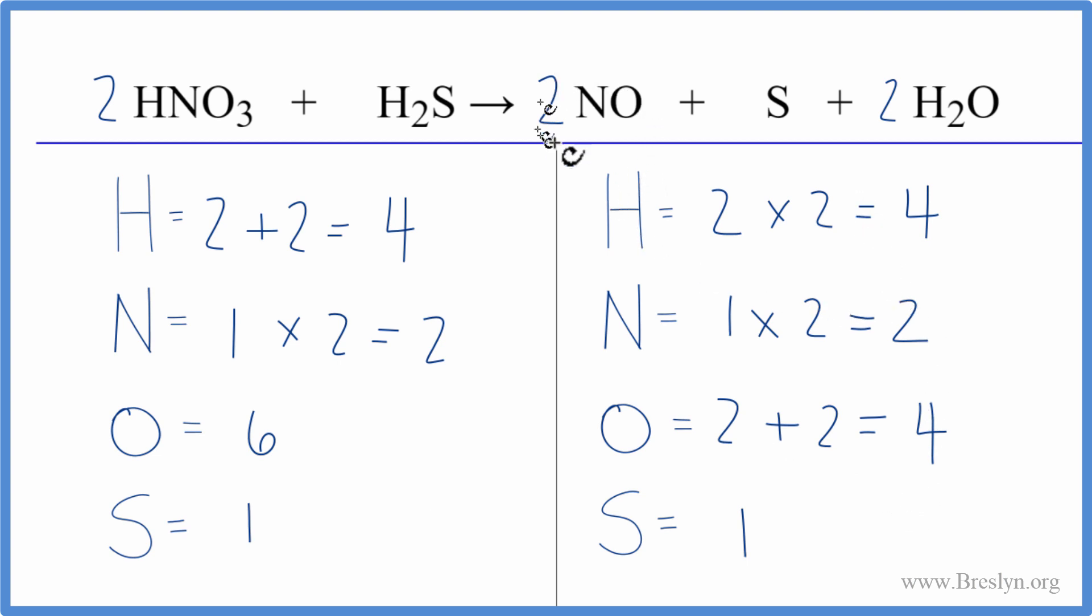I could change either the two here in front of the NO or the two in front of the H2O to a four, and that would end up giving me six oxygens. We'd change the hydrogens, but we got to do something. So let's try that.